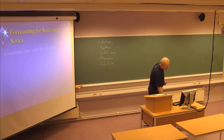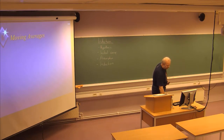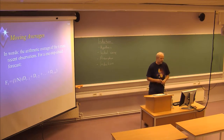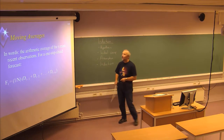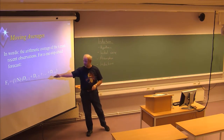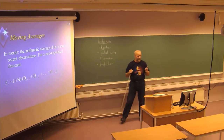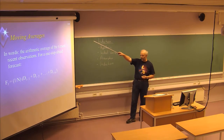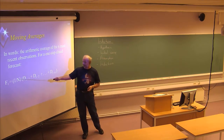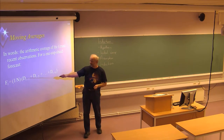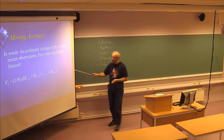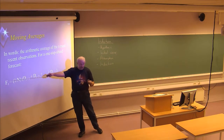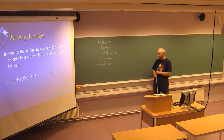We started looking at the moving averages method, which is one way to find a forecast in a stationary series when you don't have trends or seasons present. You choose a number N — the number of last data points to include — and the forecast will be the average of the N most recent observations.